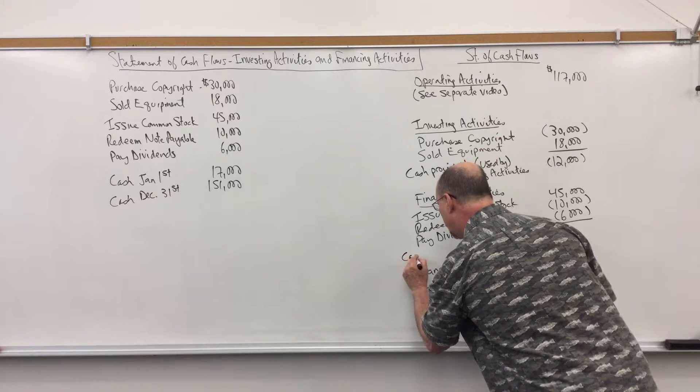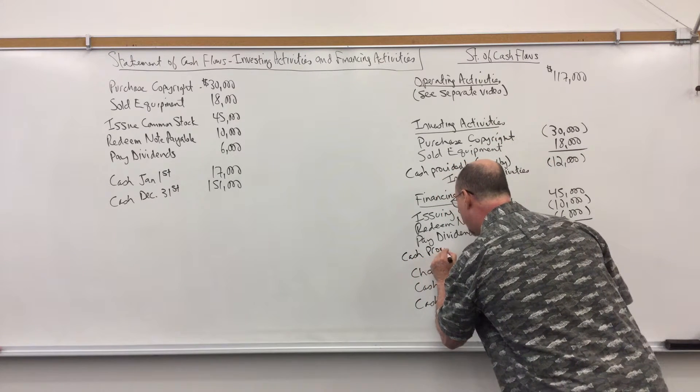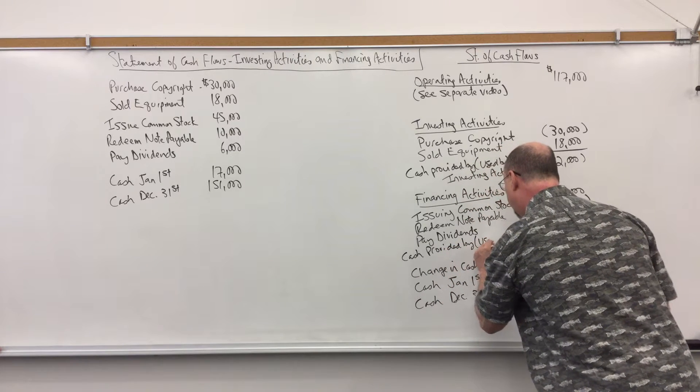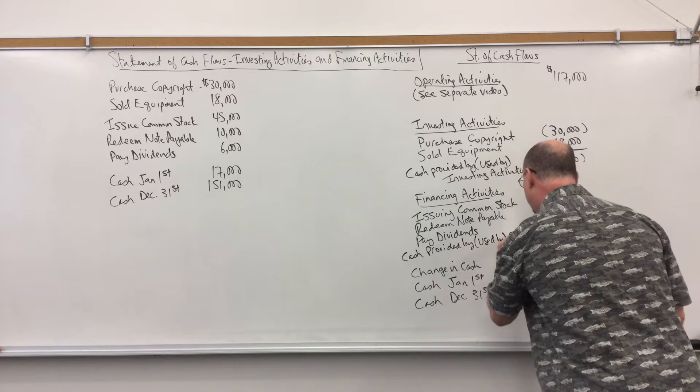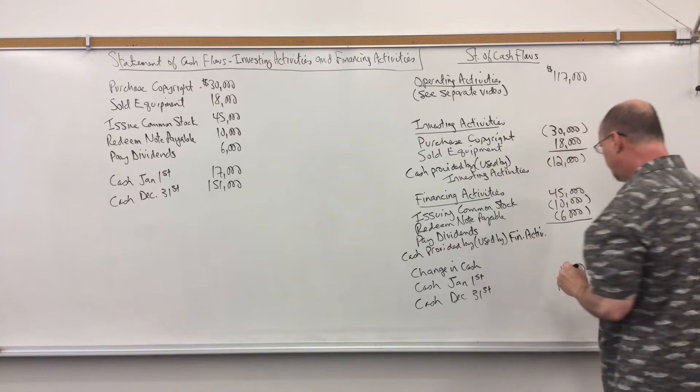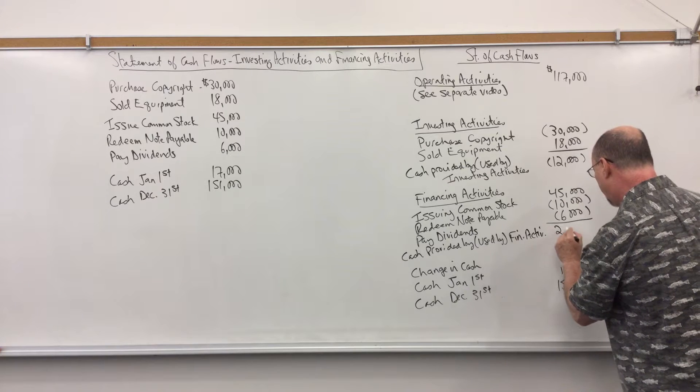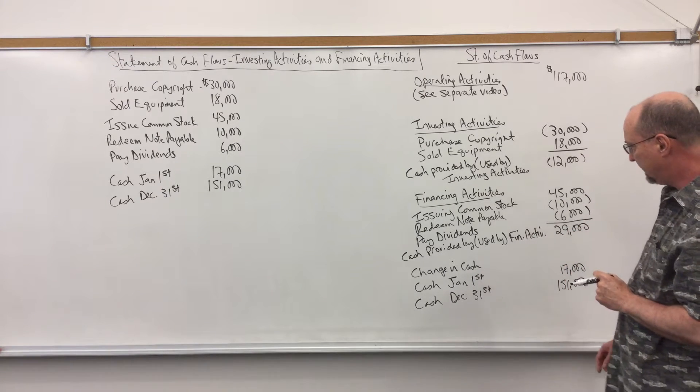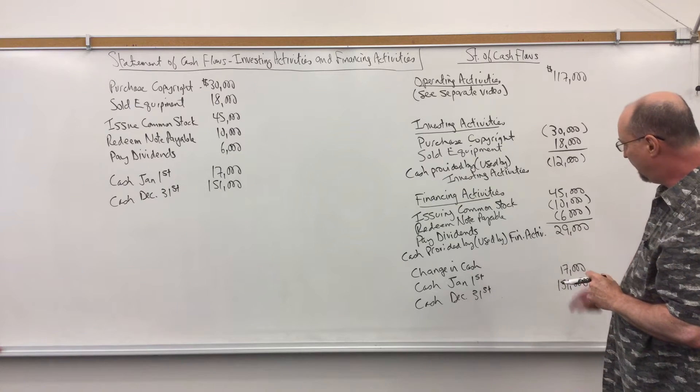So I'm going to put cash provided by or again if it's negative used by and I have to abbreviate financing activities. And this was a positive number of $29,000. So cash provided by financing activities $29,000.